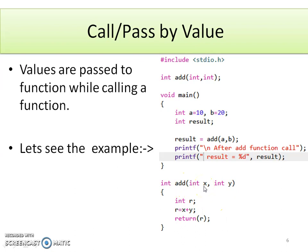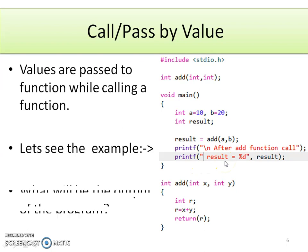The values of a and b are collected in variables x and y respectively. A new variable r is declared inside function add, which holds the addition of x and y, and we return the value of r back to the calling function main. The variable result will then hold the addition of the two numbers, and it will be displayed with the help of a printf statement. As a task, execute this code and check what the output of this program is.